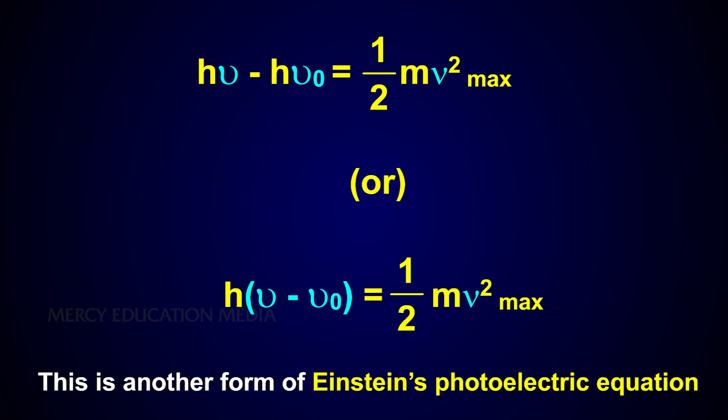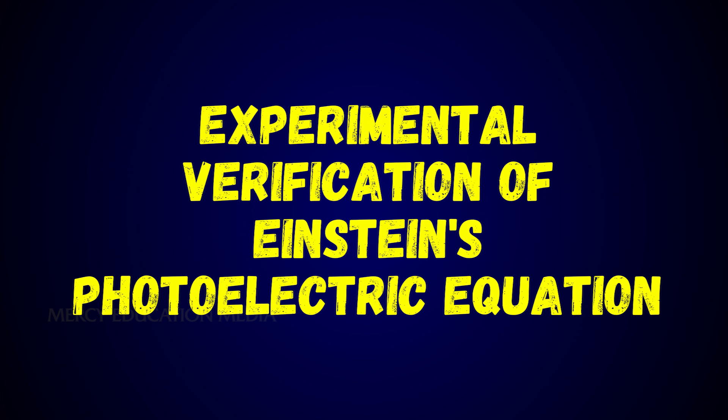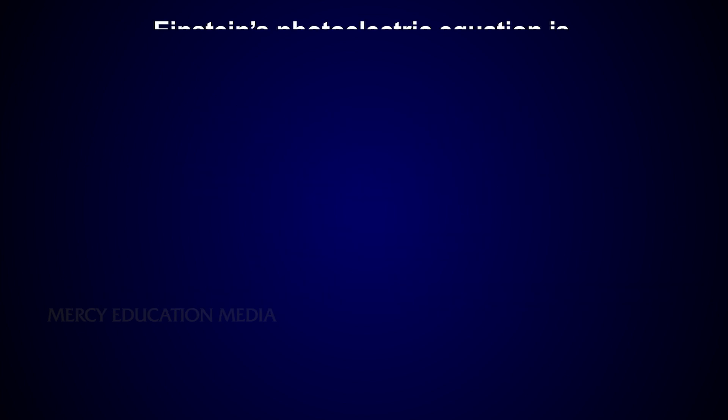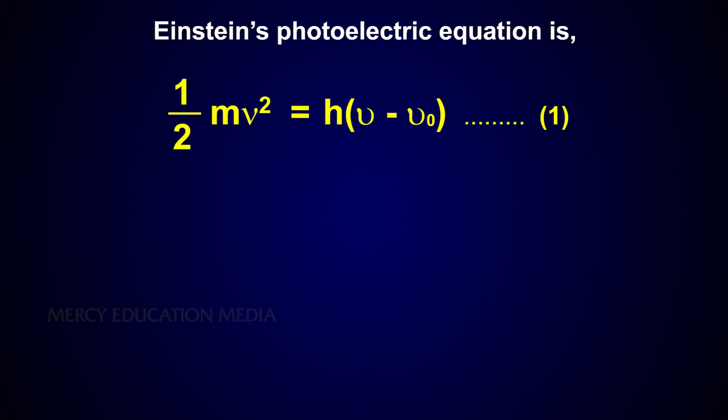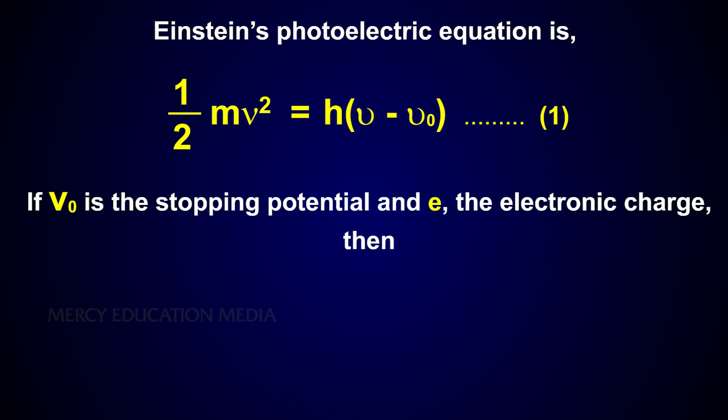Experimental verification of Einstein's photoelectric equation: Einstein's photoelectric equation is ½mv²_max = h(ν - ν₀). This is equation 1. If V₀ is the stopping potential and e is the electronic charge, then ½mv²_max = eV₀. This is equation 2.